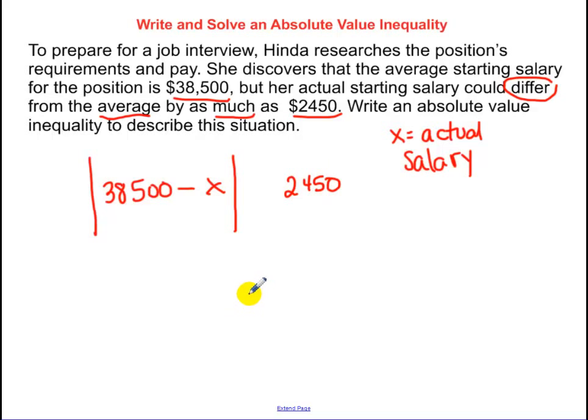By as much as, as much as is a less than or equal to sign because by as much as means this one's going to be bigger. So, now, since this is a less than, it becomes an 'and' statement.